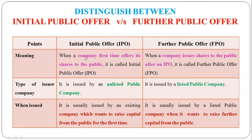When a company issues shares in the Initial Public Offer, it is raising capital for the first time. The company issues assets and funds become available to the company. When the company needs further capital, it raises additional capital through a Further Public Offer.